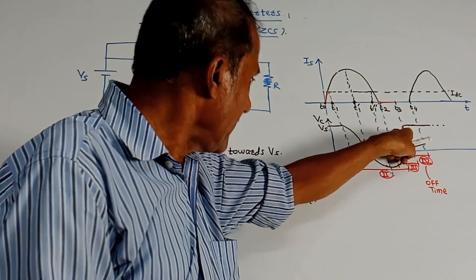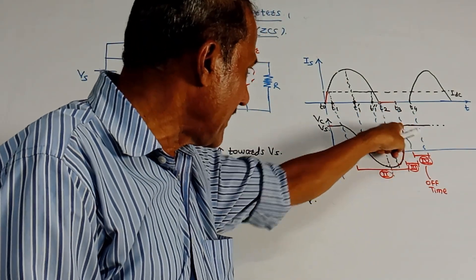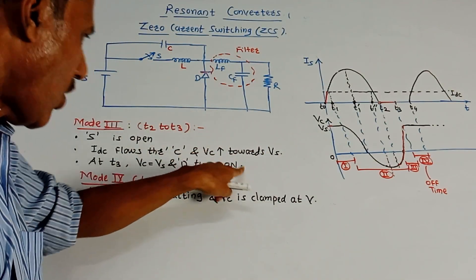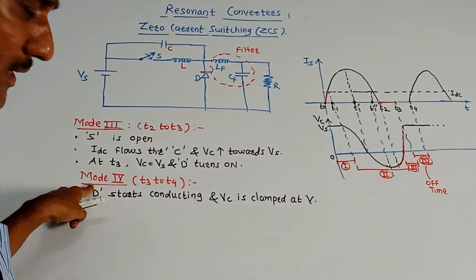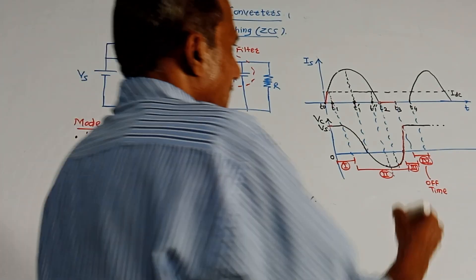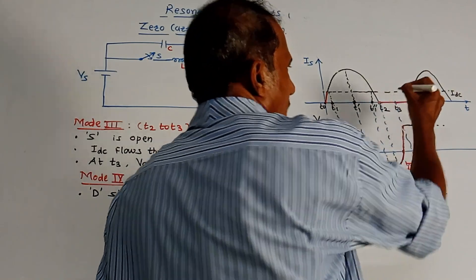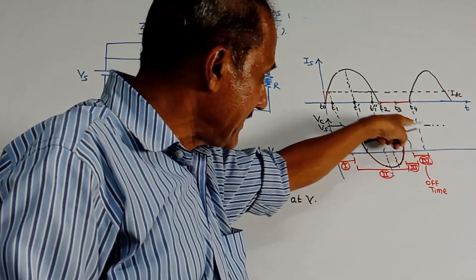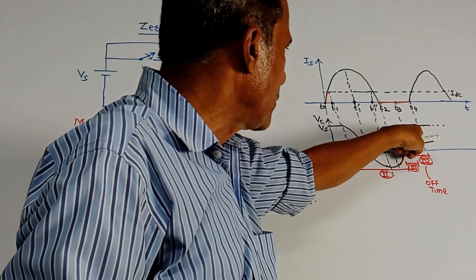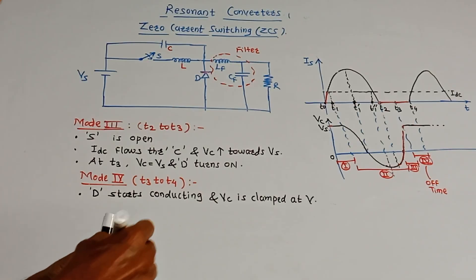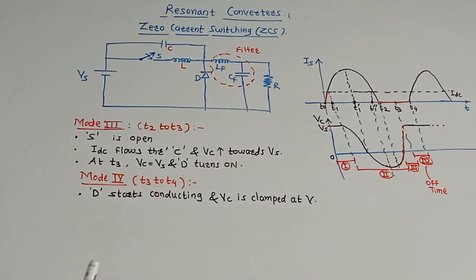Mode 4 is from T3 to T4. Switch S remains open and the voltage across capacitor is maintained constant at VS. After that, the cycle repeats. This completes the working of zero current switching.